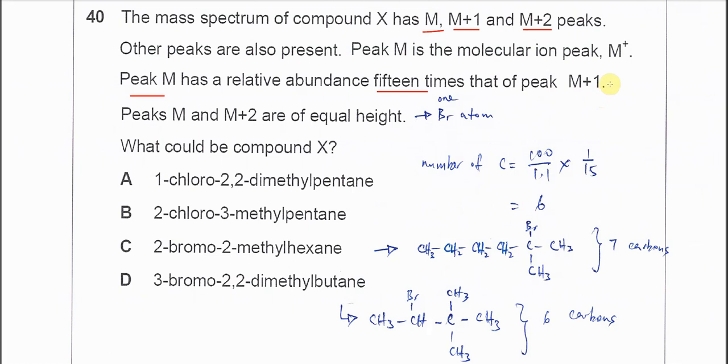From here we can calculate the carbon number. So we use 100 over 1.1 times 1 over 15. This is for the relative abundance of carbon-13, and this is the relative abundance of carbon. So you'll get 6 carbons.